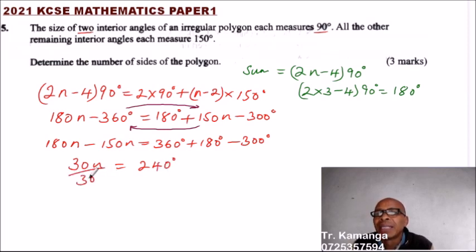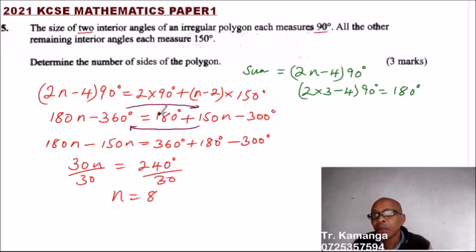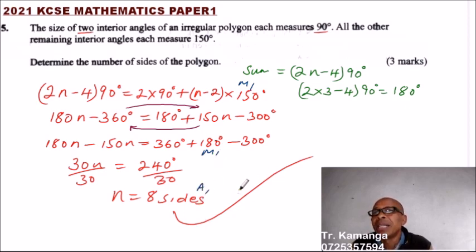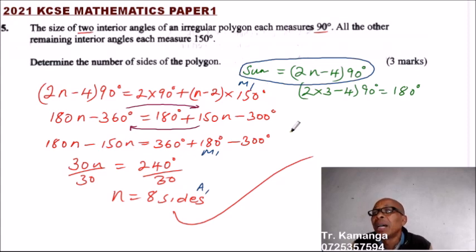Dividing both sides by 30, we get n equals 8. Since the number of sides equals the number of angles, n equals 8 means the polygon has 8 sides. You should get a method mark for each step and one mark for the answer, totalling 3 marks. Remember this formula when working with the sum of interior angles.